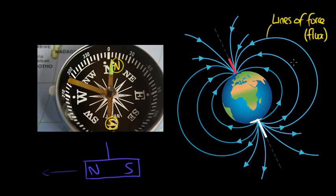So if we hang our magnet on a piece of string or use a plotting compass, we'll find that the north pole of the magnet will point towards geographic north.